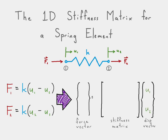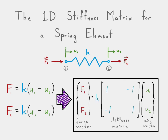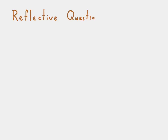There are our displacements at node one and node two, there's our first equation, and there's our second equation. Now we have the stiffness matrix for a one-dimensional spring element. We bring the stiffness k out in front, replacing k inside with ones. You can go ahead and memorize this very important matrix equation — that is our stiffness matrix for a one-dimensional spring element.